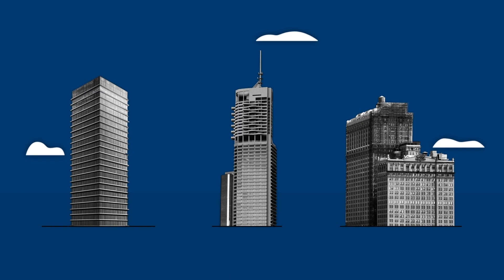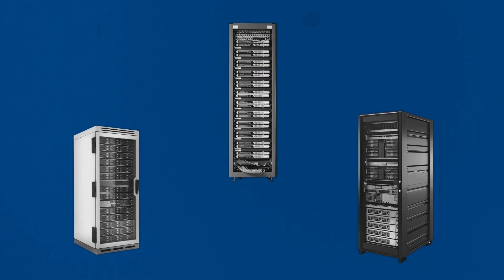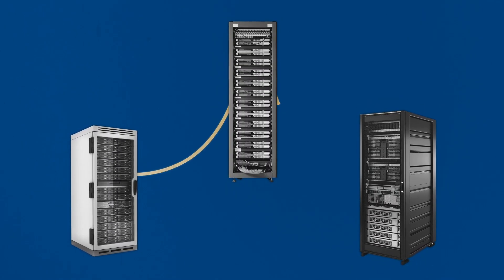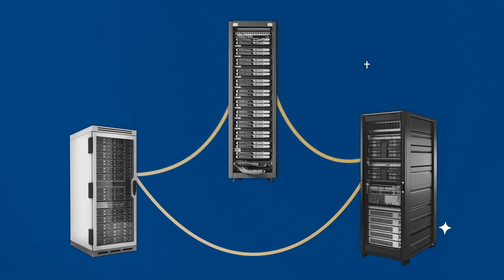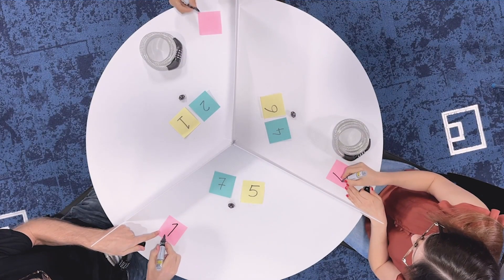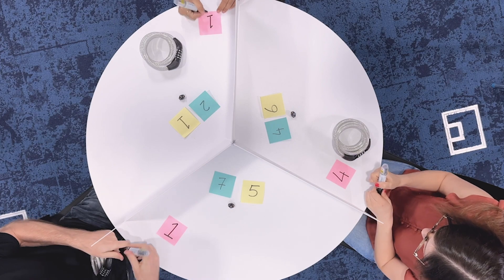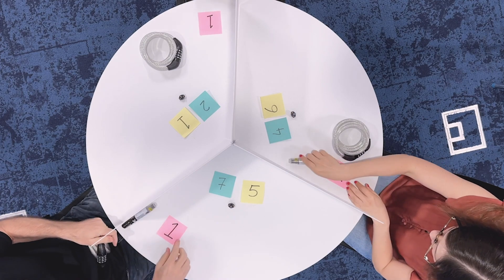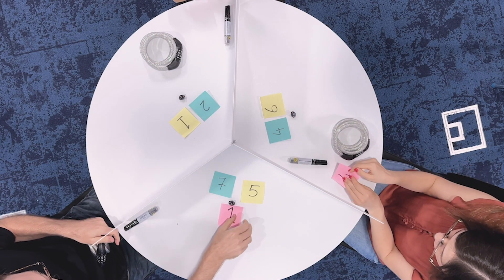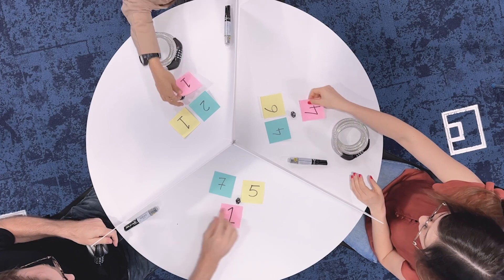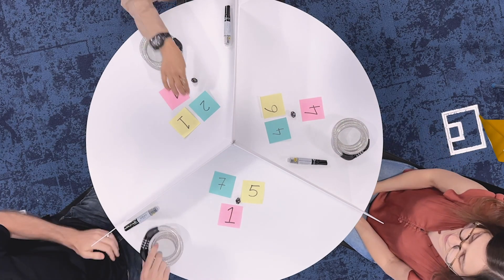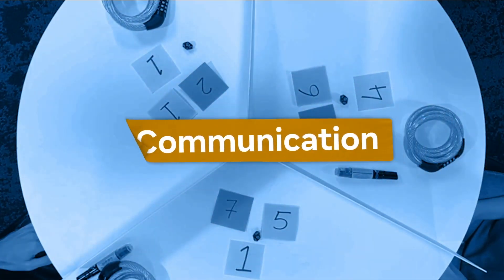Each of these organizations would need some computers. These computers would communicate with one another through the internet. In the multiplication video, do you remember the final step? The three people each wrote their number down on a sticky note and placed it on the table to their right, where the next person could also see it. That's an example of communication.